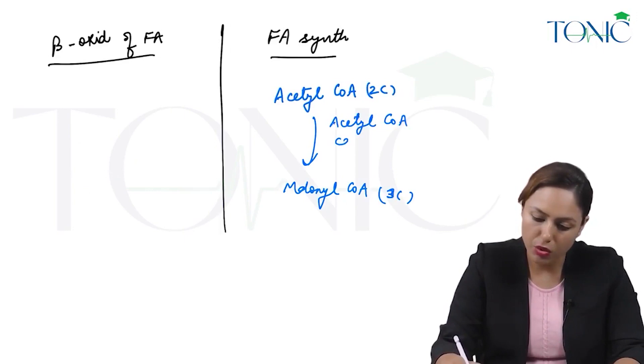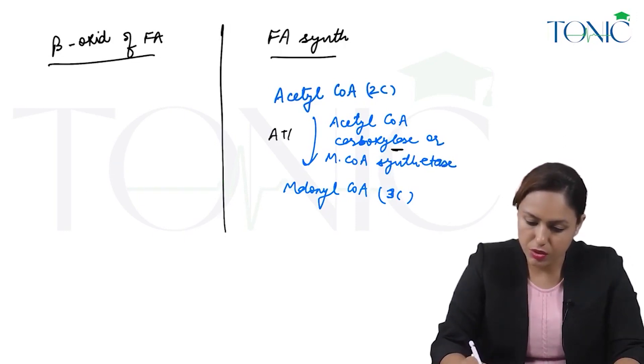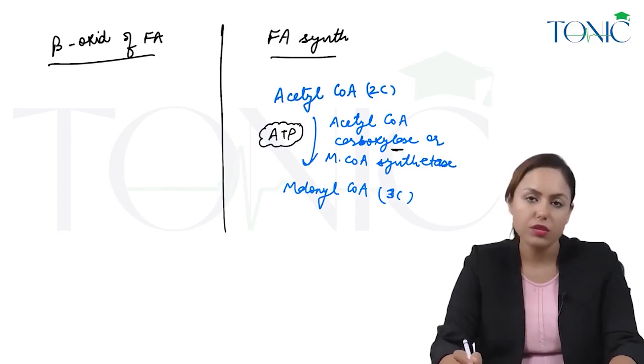That is acetyl CoA carboxylase, or malonyl CoA synthetase. Because any carboxylase uses ATP, this enzyme also uses ATP. So this is the rate limiting enzyme in fatty acid synthesis.